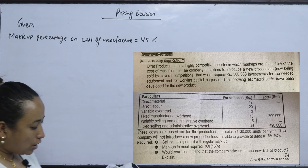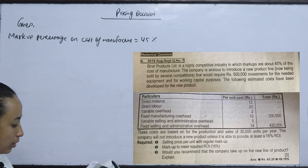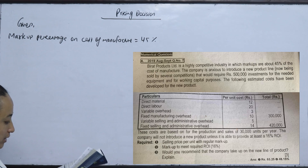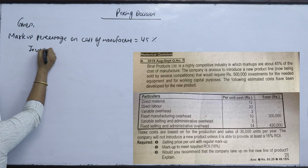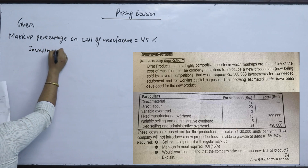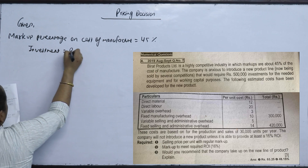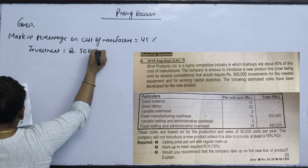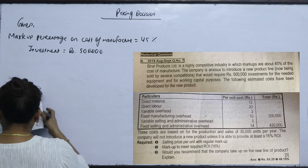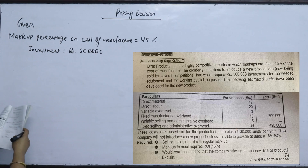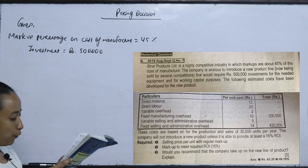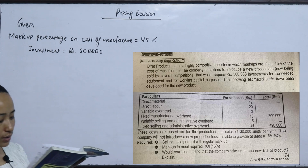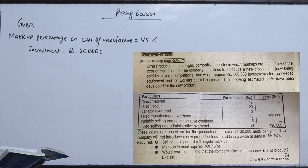The company is anxious to introduce a new product line currently being sold by several competitors. This would require a rupees 5 lakh investment for the needed equipment and for working capital purposes. The following estimated costs have been given for the new product.